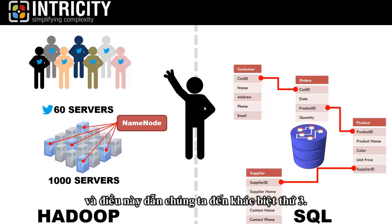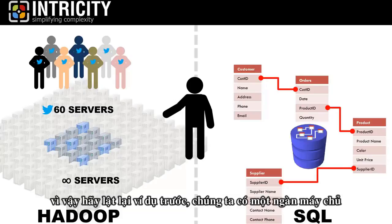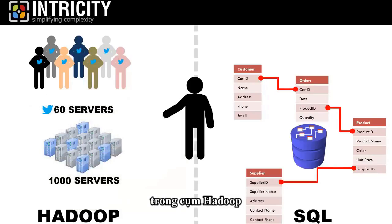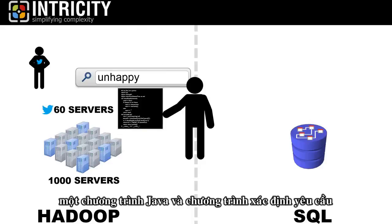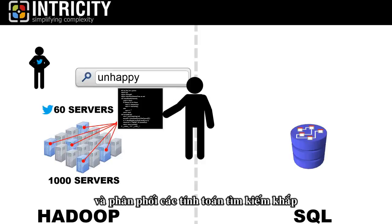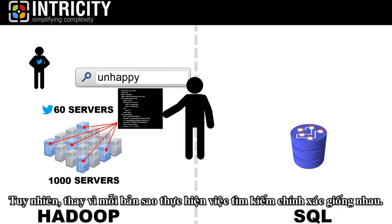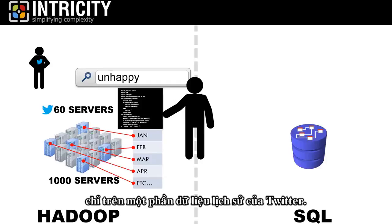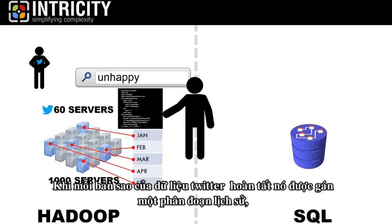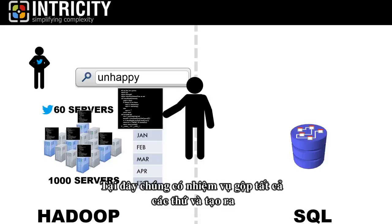This leads us to our third difference. When thinking about big data solutions like Hadoop, think of something architected for an unlimited number of servers. Imagine I'm searching Twitter data and I want to see all the sentences that have the word 'unhappy.' The structure of the query in Hadoop will come in the form of a Java program, and that program defines the request and distributes the calculation of that search across all 60 copies of my profile in HDFS. Instead of each copy conducting the exact same search, the Java code will break apart the workload so that each server is working on just a portion of my Twitter history. As each copy finishes its assigned segment, the answers are delivered to a reducer program on the same node cluster, which is responsible for adding up the tallies or producing a consolidated list.